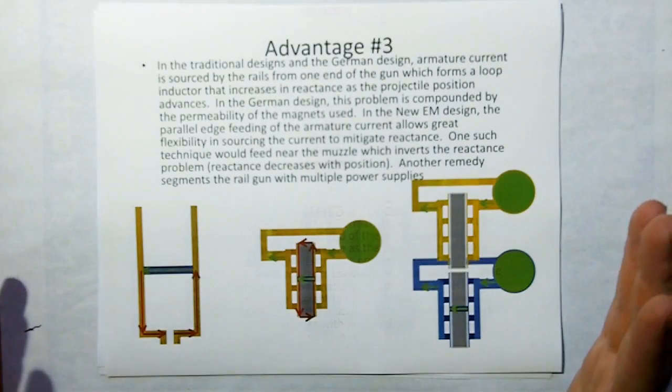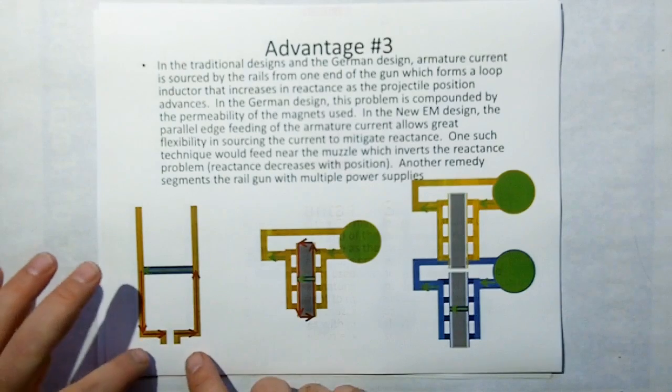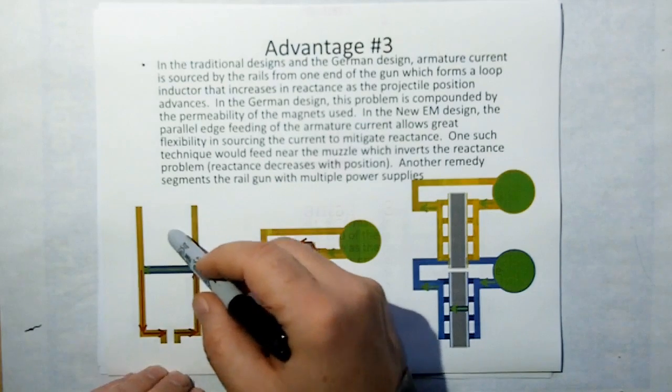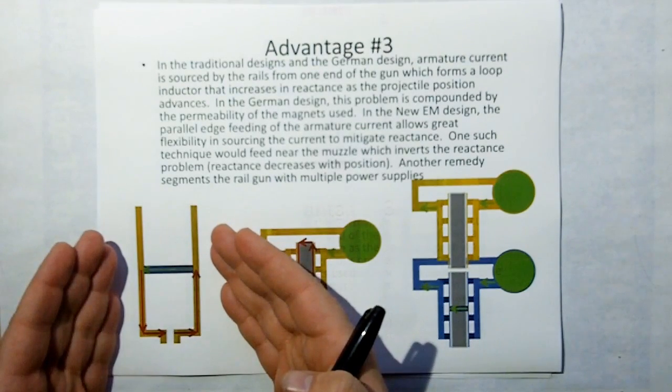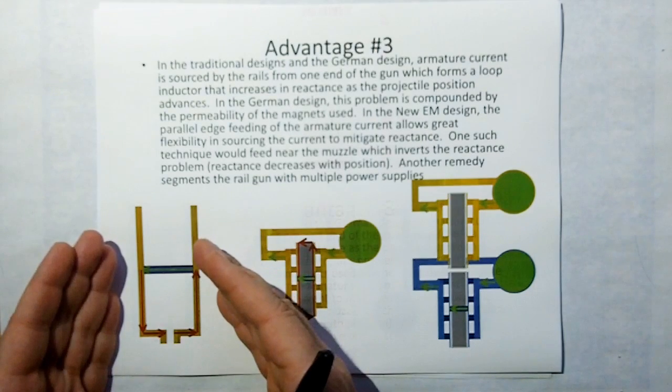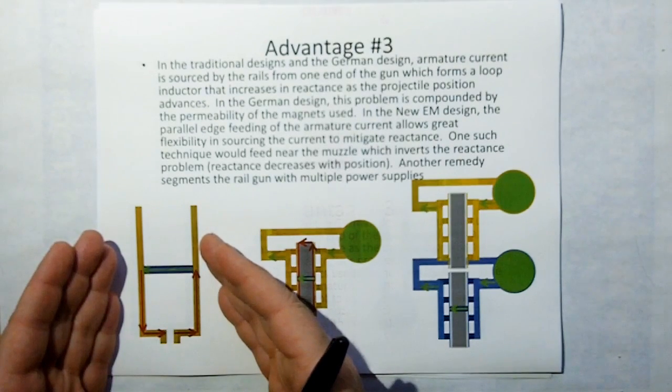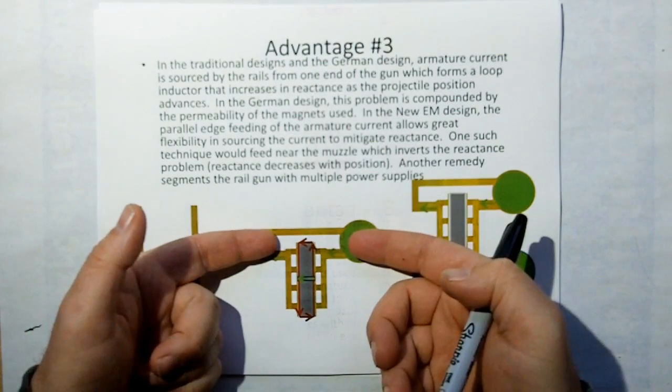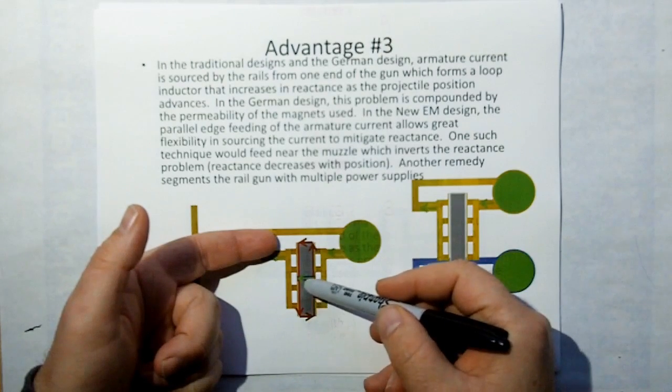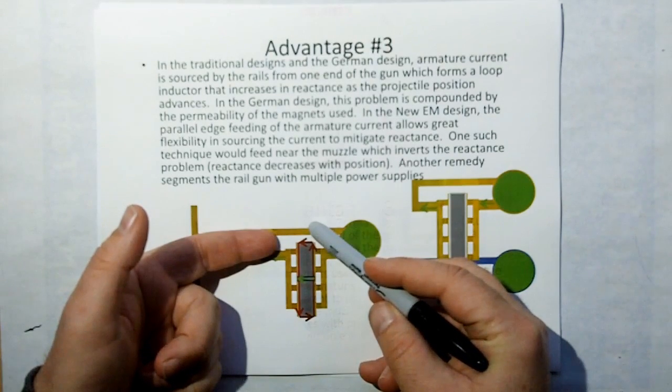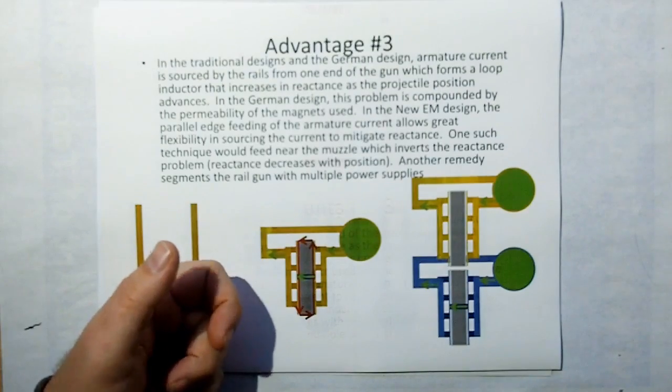One of the problems with the previous designs and the German designs, you have to feed it from the end. Which means that as the armature progresses down the rails, the size of the loop gets bigger. And if people that are familiar with classical theory know that as your size of your loop gets bigger, your inductance and your reactance increase as well. But because we're parallel feeding it, we're using the magnets to source the field and we can source the armature any way we want, we can actually feed the gun from the front. And thereby, as the armature goes down the magnet, we're actually reducing the size of the loop that the current has to go through. So we're doing the opposite. We're decreasing the reactance as the armature gains speed.